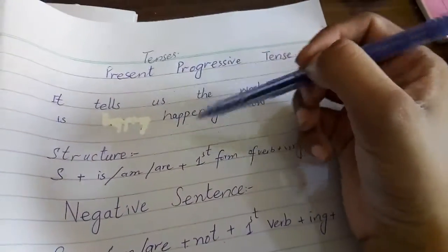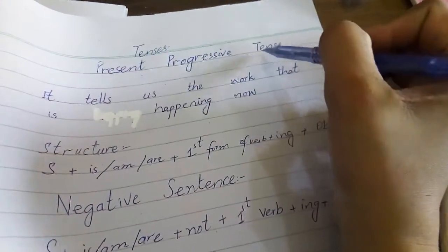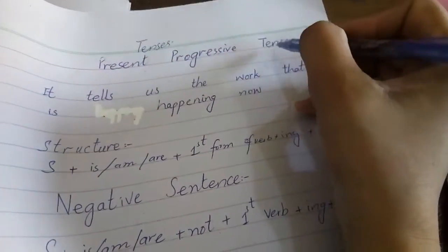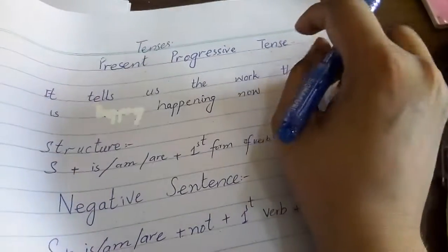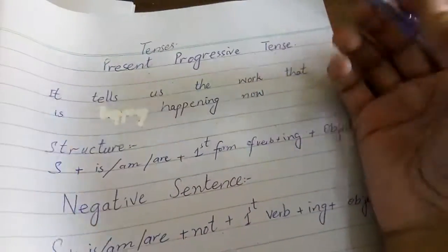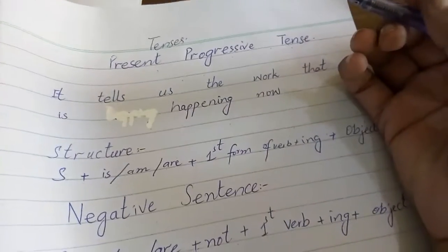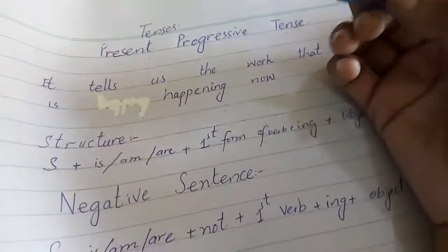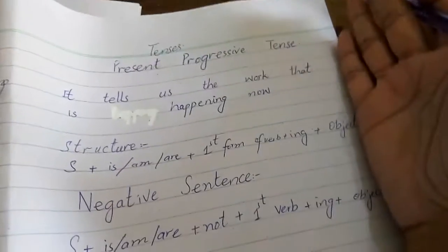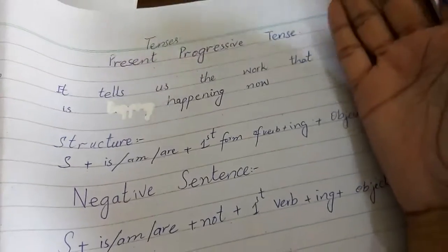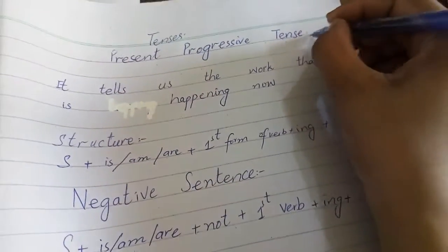Present progressive tense tells us about the works or actions that are happening now — that is happening now. For example, I am talking to you, I am making a video. The work that is happening now is actually present in this tense.